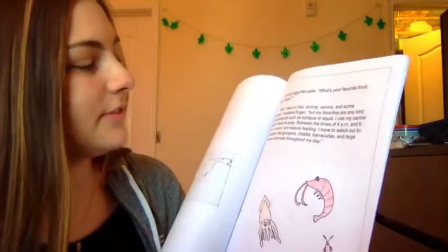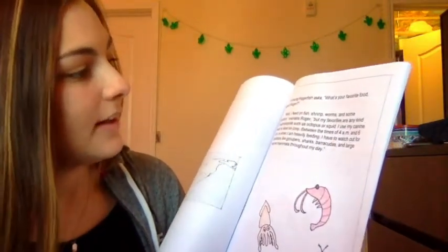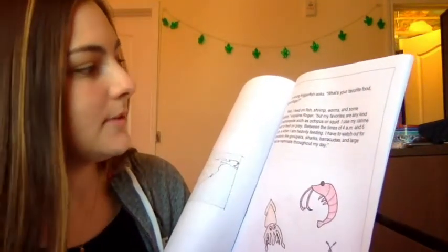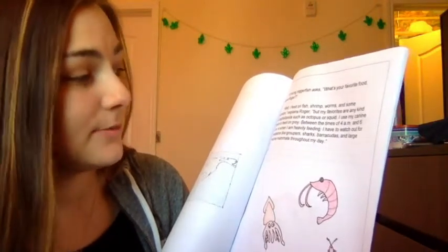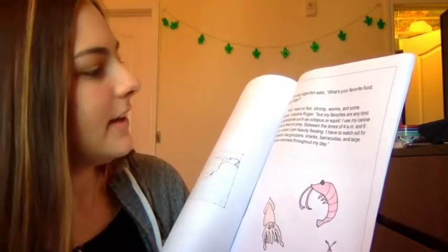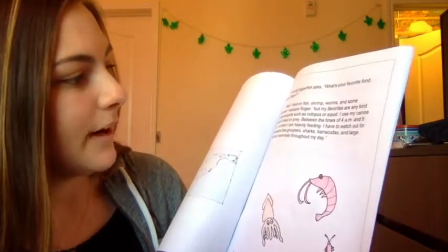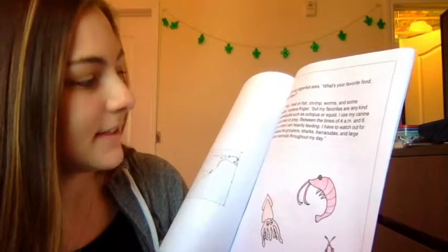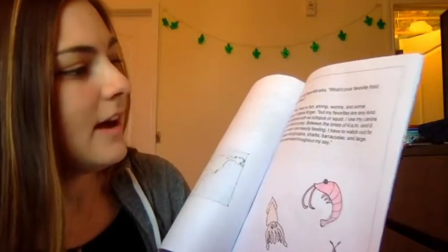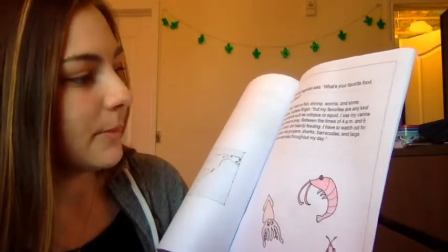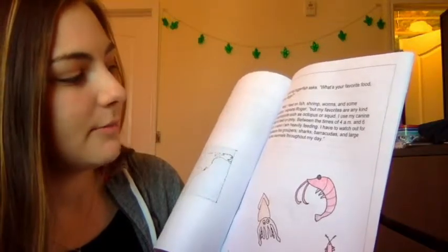A young triggerfish asks, what's your favorite food, Agent Roger? Well, I feed on fish, shrimp, worms, and some plankton, explains Roger, but my favorites are any kind of cephalopods such as octopus or squid. I use my canine teeth to feed on prey. Between the times of 4 a.m. and 6 a.m. is when I am heavily feeding. I have to watch out for predators like groupers, sharks, barracudas, and large marine mammals throughout my day.